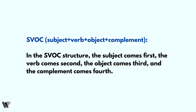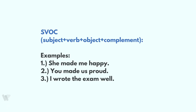The next structure is subject plus verb plus object plus complement, or SVOC. In this structure the subject comes first, the verb comes second, the object comes third, and the complement comes fourth. Let's look at an example to understand this structure further.